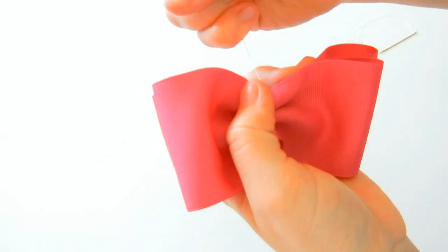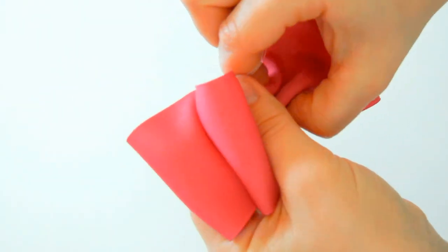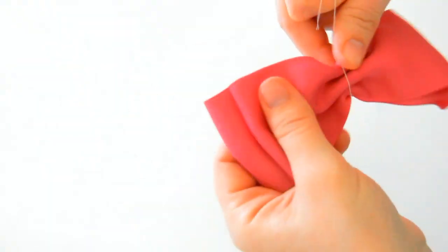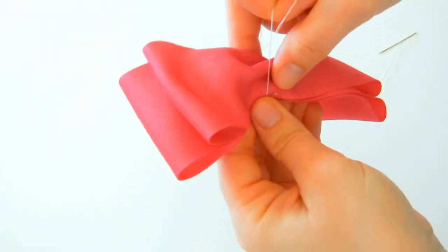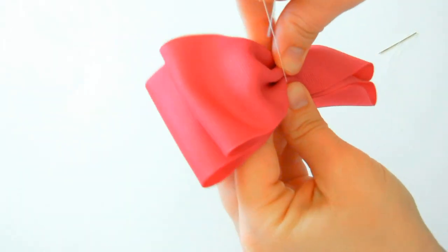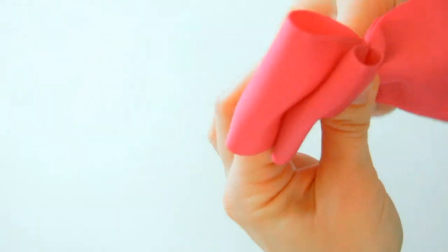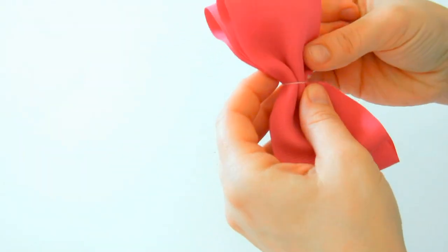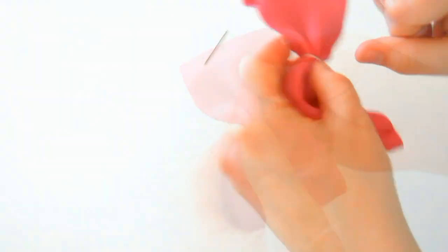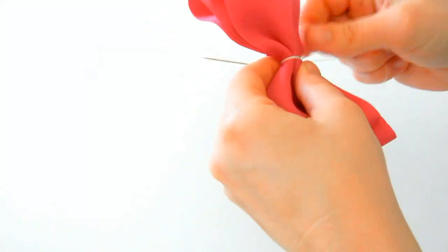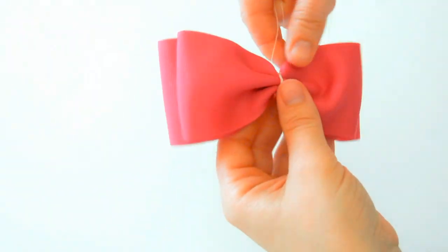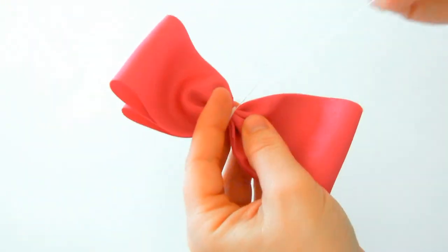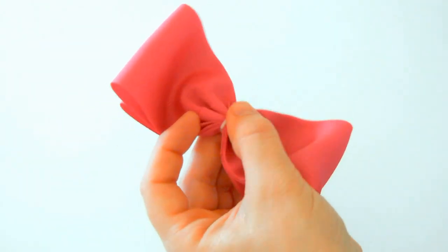Just pull it up and gather it, then wrap around. You want to make sure that all the creases are even and look good. Then tighten it, pull and tighten. Take a couple stitches through the back.